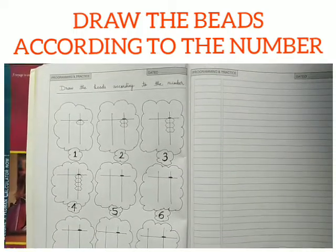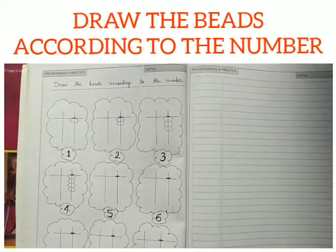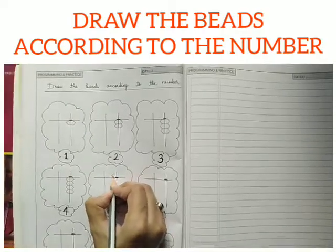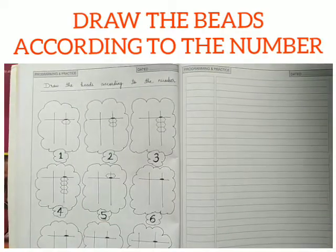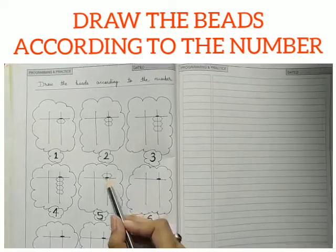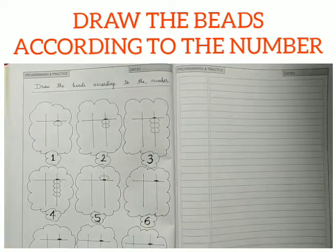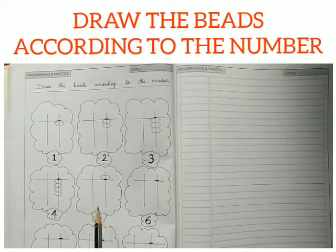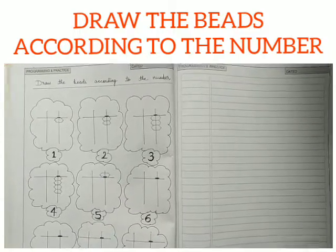Now, for 5, what we have to do? You have to draw 1 upper bead. As children, we all know that the upper bead has a value of 5. So, we don't have to draw these lower beads. We will draw 1 upper bead which has a value of 5.